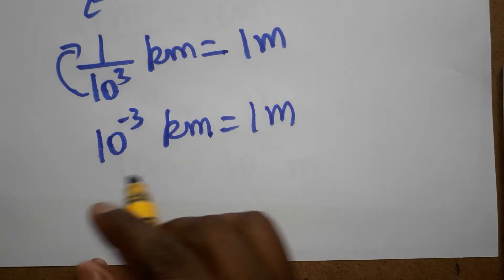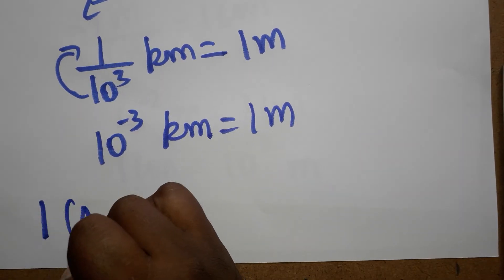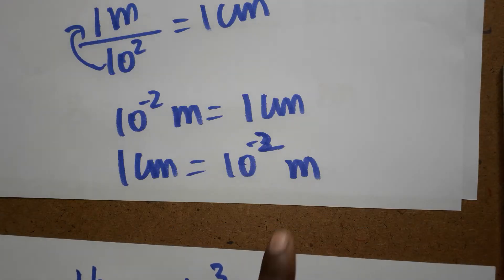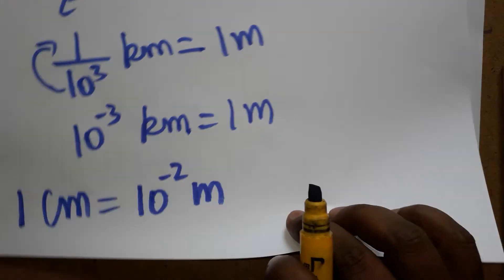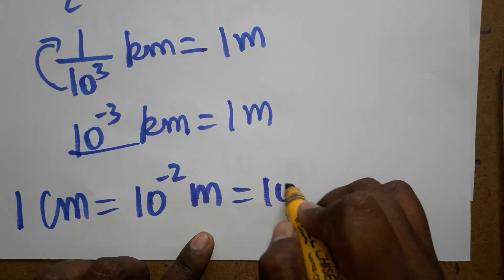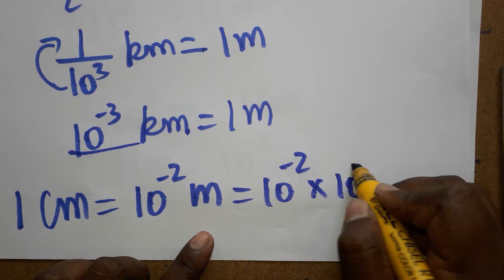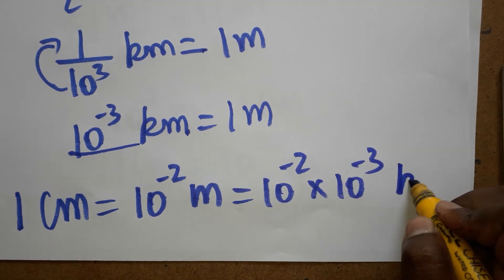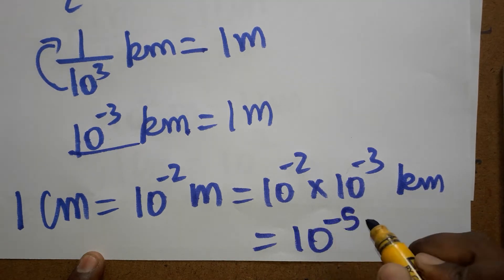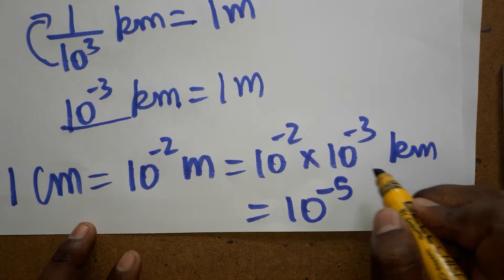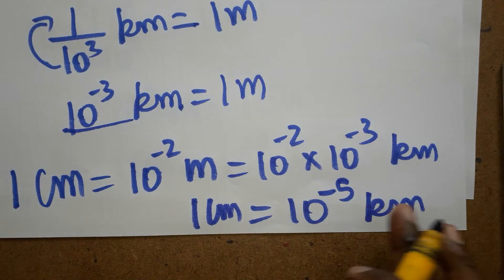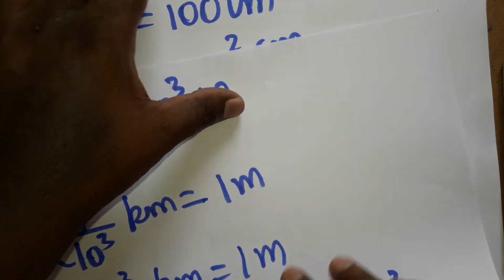Now our conversion: 1 centimeter equals 10^-2 meter, and 1 meter equals 10^-3 kilometer. So 1 centimeter equals 10^-2 into 10^-3 kilometer. Adding the powers: 10^(-2 + -3) equals 10^-5. So one centimeter is equal to 10^-5 kilometer. We have the first conversion.